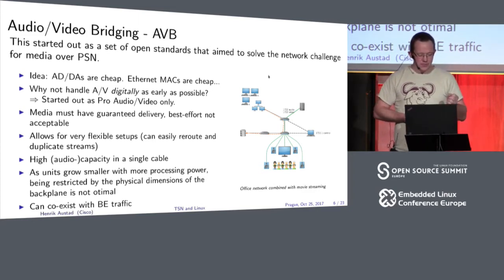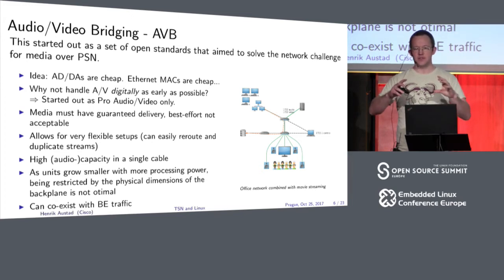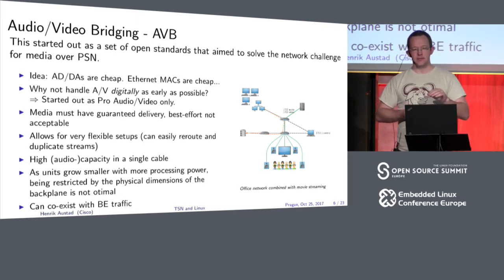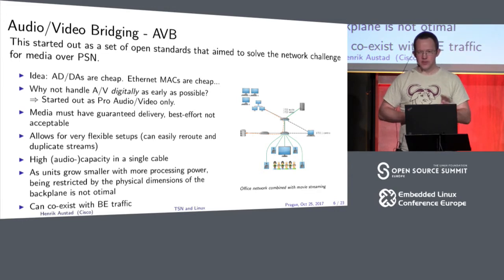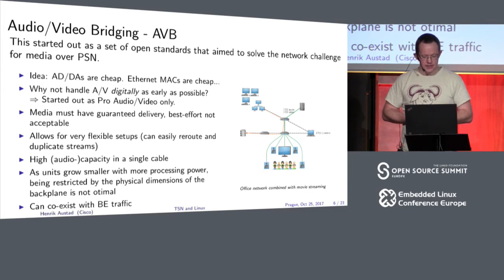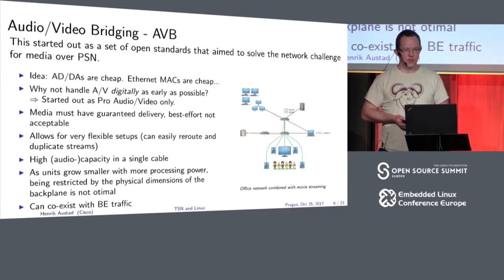The interesting problem we're faced with at Cisco is we're actually limited by the physical dimensions of the backplane. We're getting to the point where it's not the internal processing that limits what we can do, but the number of microphones we can physically connect. Using AVB, we can expand this greatly, and we're back to the CPU being the bottleneck again. Another benefit: if you have reliable reserved bandwidth, you can coexist with best-effort traffic, so you don't have to run two networks.